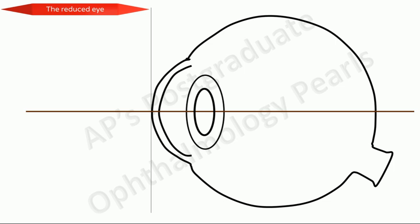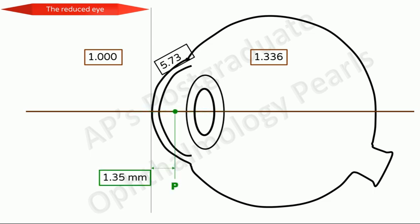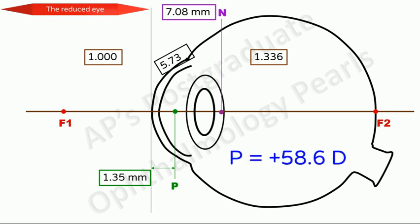The reduced eye is an ideal spherical surface, the radius of curvature of which is 5.73 mm, and which separates two media of refractive indices 1 and 1.336. The principal point lies 1.35 mm behind the anterior surface of the cornea, that is in the anterior chamber. The nodal point is 7.08 mm behind the anterior corneal surface, that is in the posterior part of the lens. Its first principal focus lies 15.7 mm in front of the cornea, and its posterior focal point lies 24.13 mm behind the anterior surface of the cornea — that is, in a normal eye, upon the retina. Its power is +58.6 diopters.